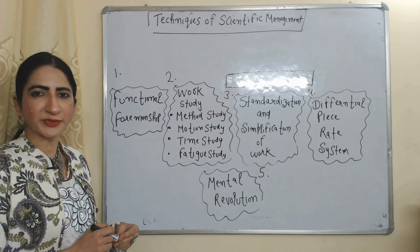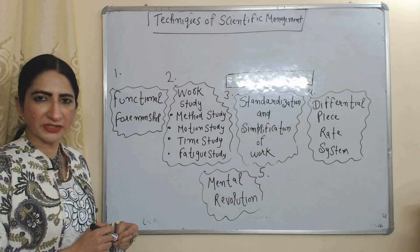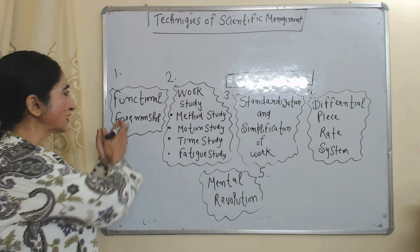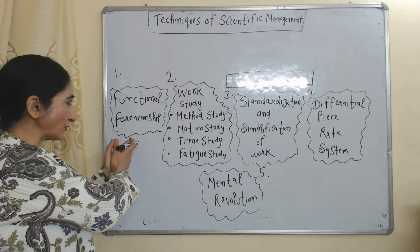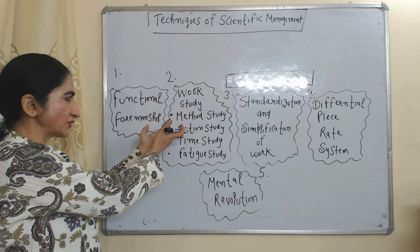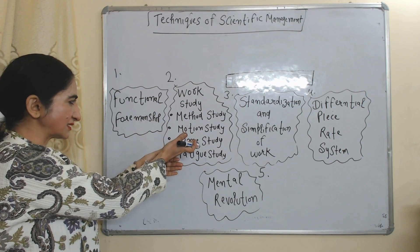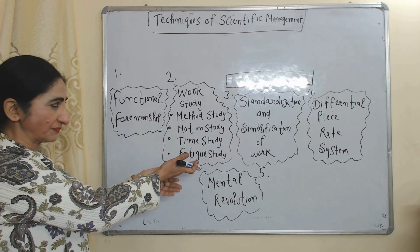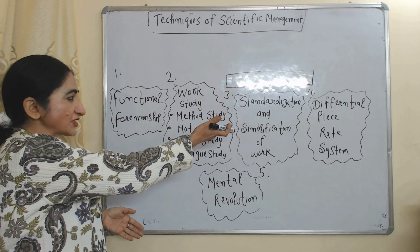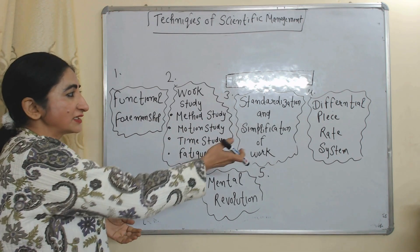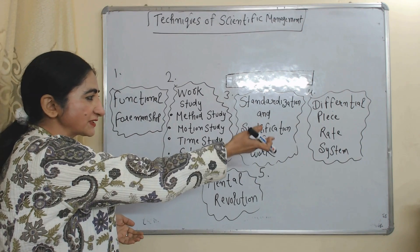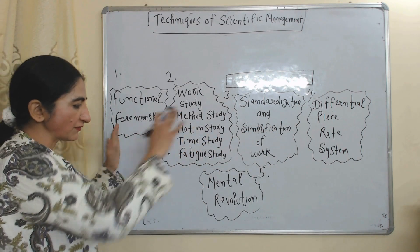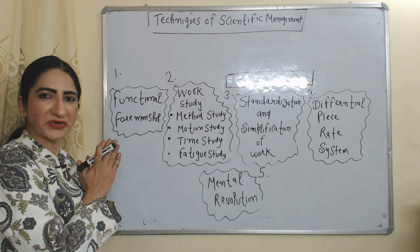Now the techniques of scientific management. There are five kinds of techniques: functional foremanship; work study, which includes method study, motion study, time study, and fatigue study; standardization and simplification of work; differential piece rate system; and mental revolution. We will discuss each one by one.